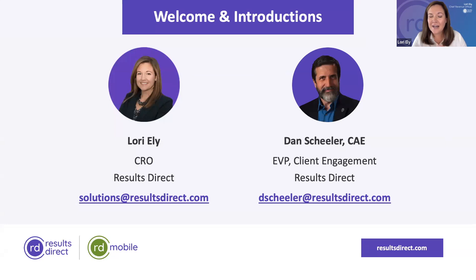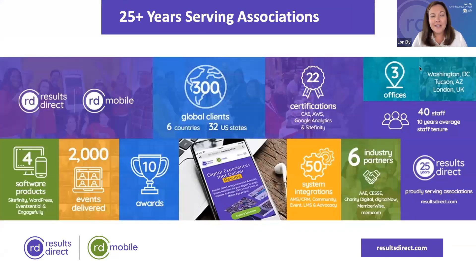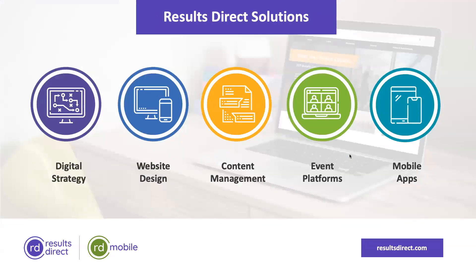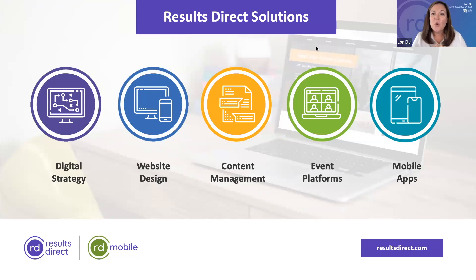A little bit of background on Results Direct. For over 25 years, Results Direct has helped associations to achieve real results from their websites and mobile apps. We work with well over 300 clients worldwide. Results Direct offers a range of solutions, including digital strategy, web design and development, CMS solutions, as well as industry-leading mobile event app and year-round member app for associations.